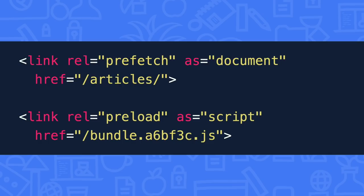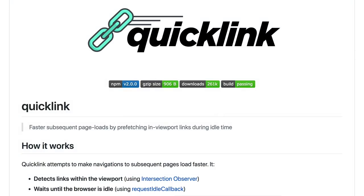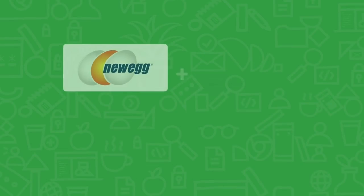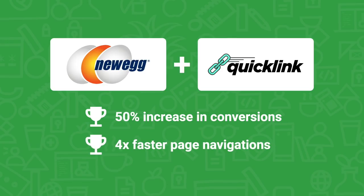But what about the present? Often the quickest and easiest way to improve performance is to ensure important content loads early. The preload and prefetch tags do this and are well-supported. We also have the Quicklink library, which automates prefetching content likely to be needed in the next navigation. Newegg used this and saw a 50% increase in conversions and page navigations that were four times faster. See the description for links to the library and more information on prefetch and preload.